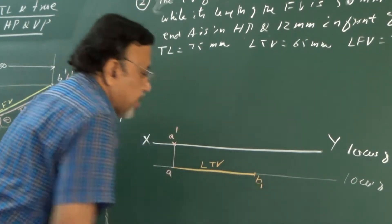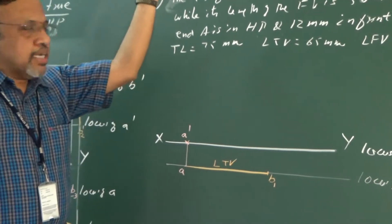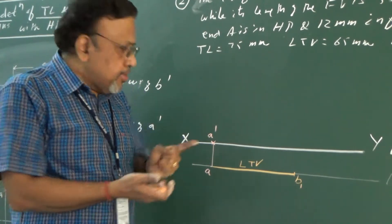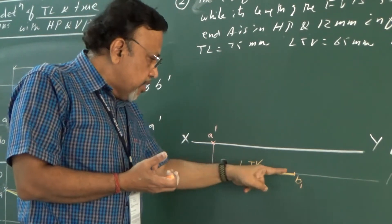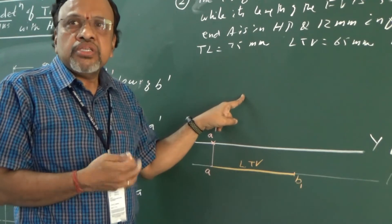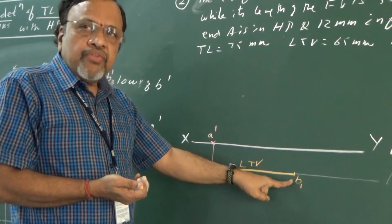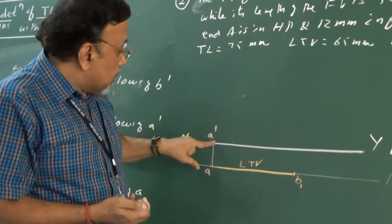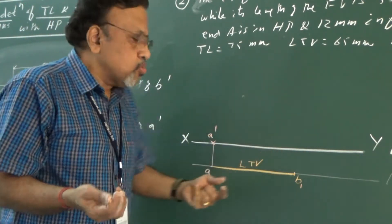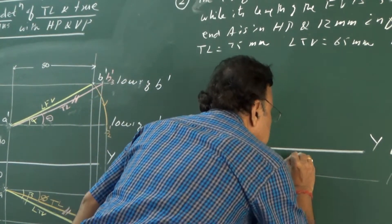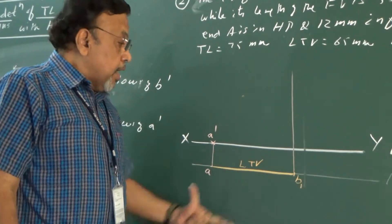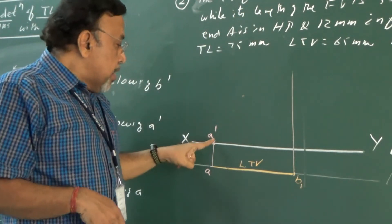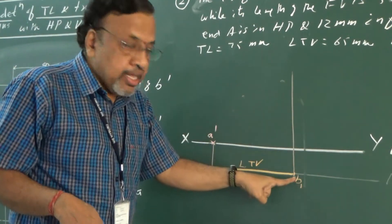I will call this point B1. Now, what is the rule I stated earlier? When a line is parallel to XY in one view, in the other view I get the true length. Since LTV is parallel to XY, in the front view I see the true length. I know the true length is given as 75. Now, B1 dash should be on the projector, where I draw an arc from A dash with radius equal to true length, which is 75. So I will draw this projector, then take the compass with A dash as center and radius equal to 75, and cut it on this projector line.